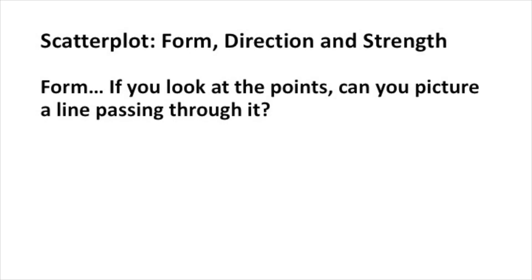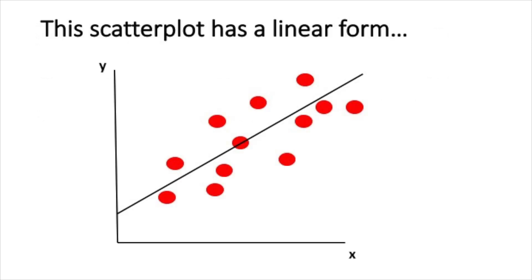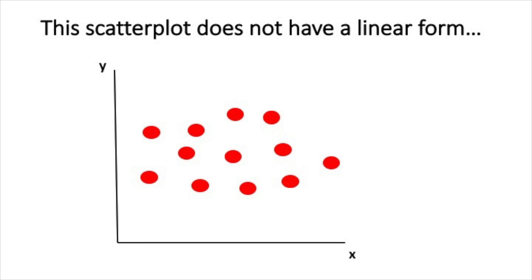One type of form is a linear form. If you look at the points, can you picture a line passing through it? Here's an example of a scatter plot that has a linear form. Even if you didn't have that line shown through the scatter plot, if you just saw these points, you could picture that line passing through them. Here's a scatter plot that doesn't have a linear form — it's just a bunch of random points, and there's no clear line that would pass through these points.